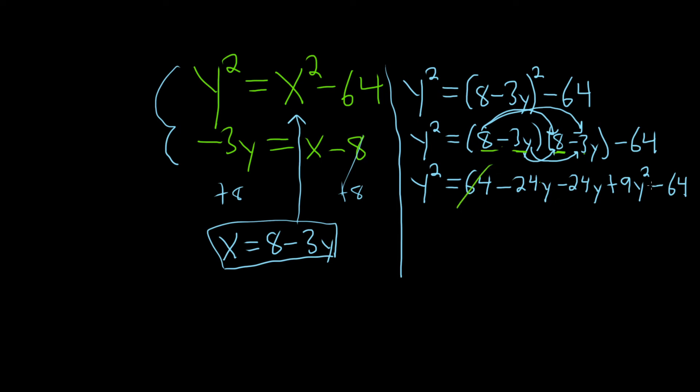Oh, look. The 64s cancel. Very nice. So we have y squared equals negative 48y plus 9y squared.